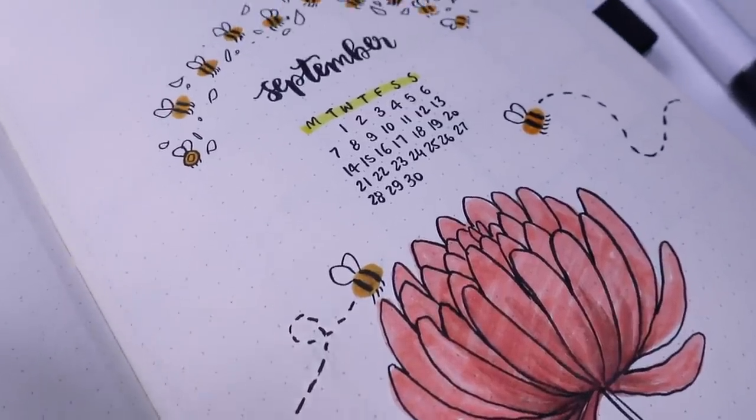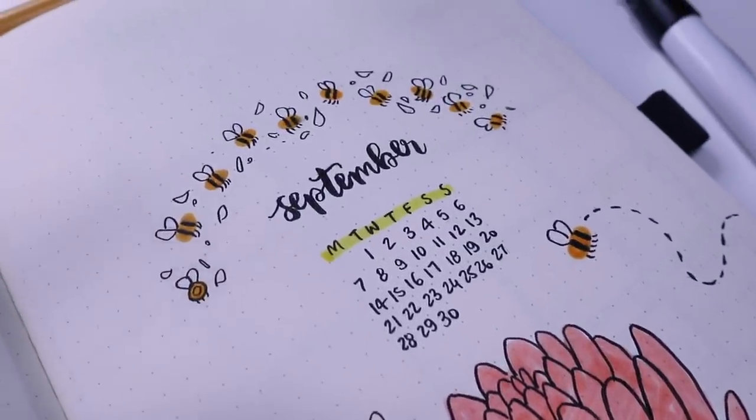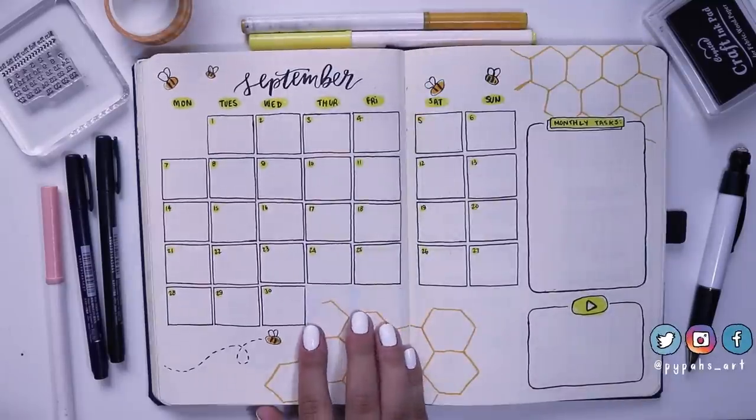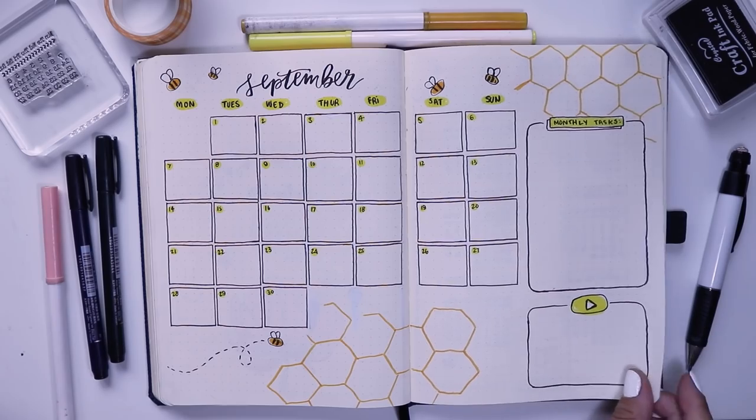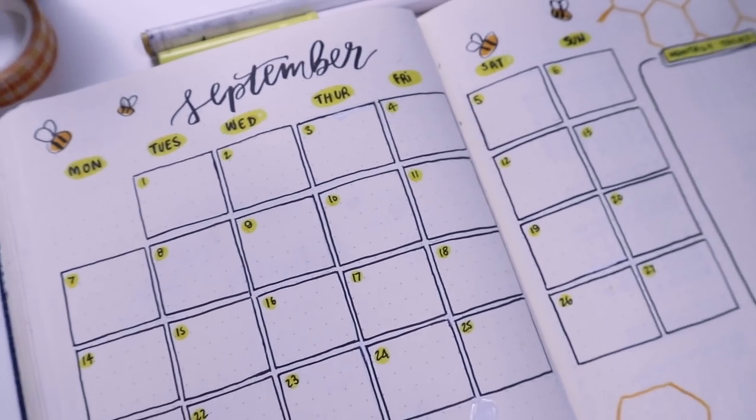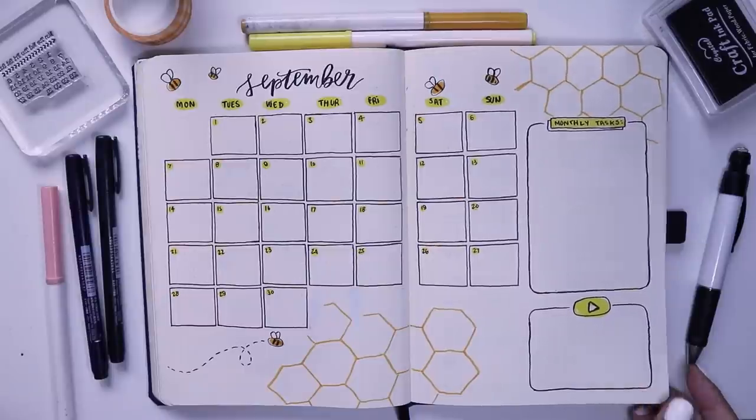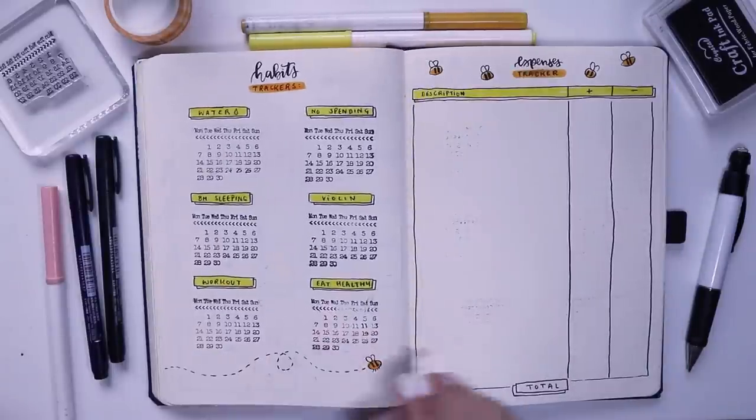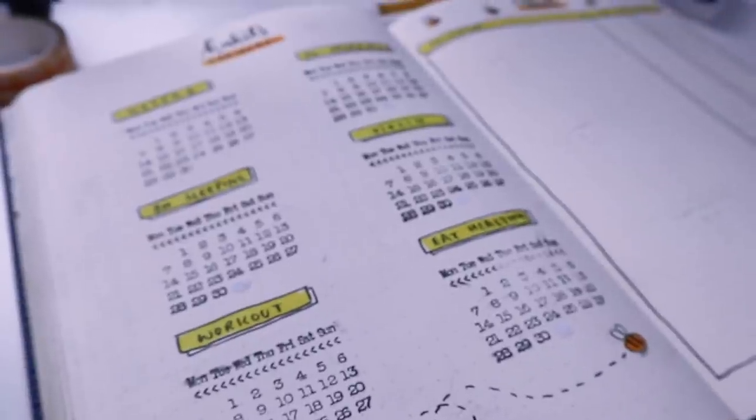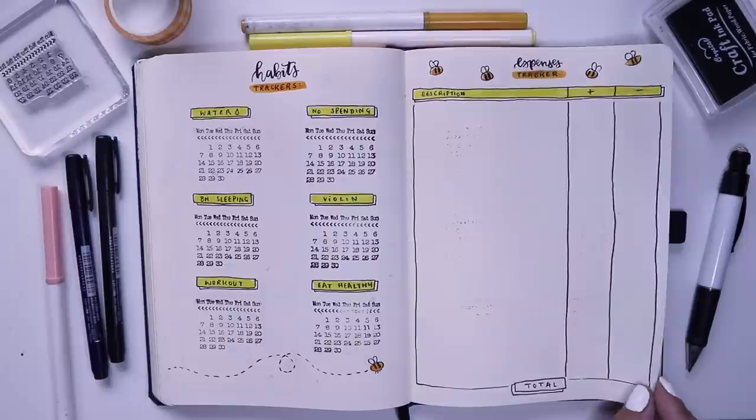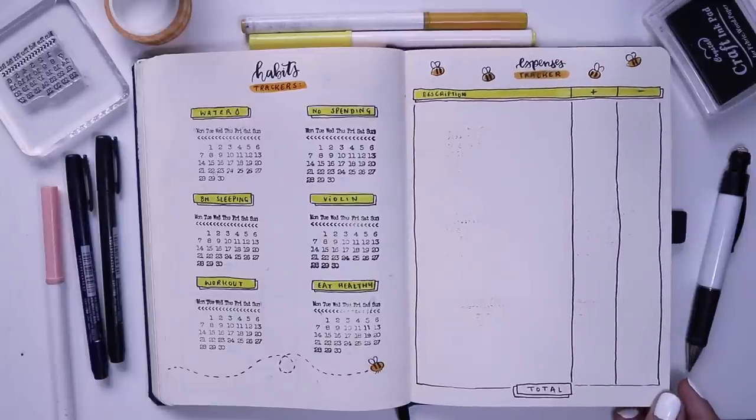With that done, that was it for my September bullet journal plan with me. I'm going to give you guys a little bit of an overview now of all the pages that I did today. I really hope you guys enjoy this video. I hope you recreate any of these pages. If you do, don't forget to tag me in them. I love seeing your recreations. I hope you enjoyed watching this video. I hope you have a lovely September and I will see you guys in my next video. Bye-bye!